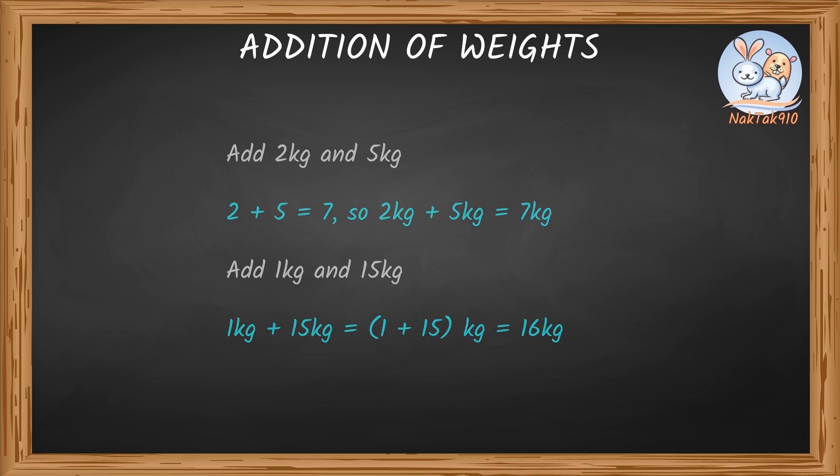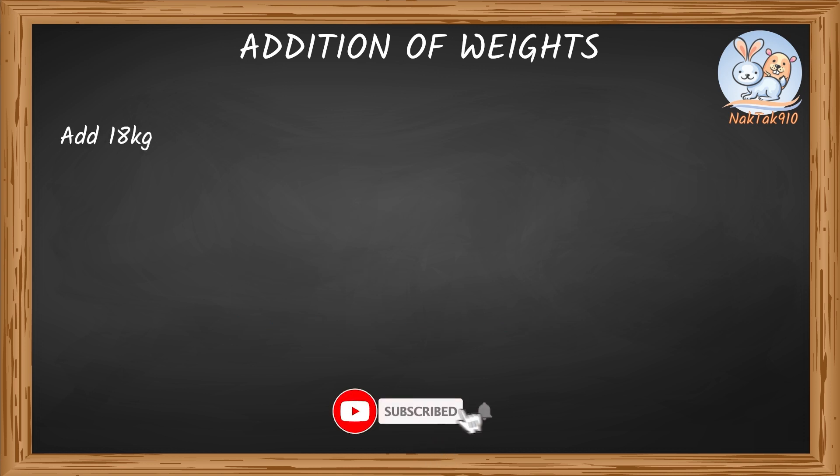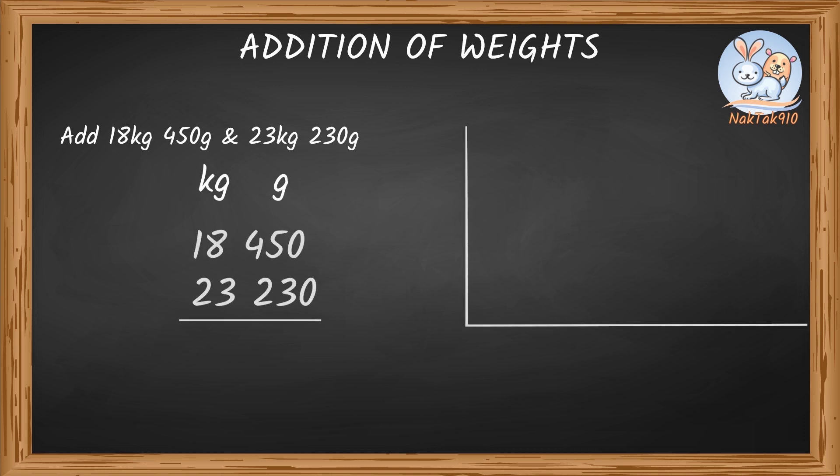Let's take an example. Add 18kg 450g and 23kg 230g. These measurements contain mixed units with kg and g. So, first step is to arrange kg and g in columns, one below the other.